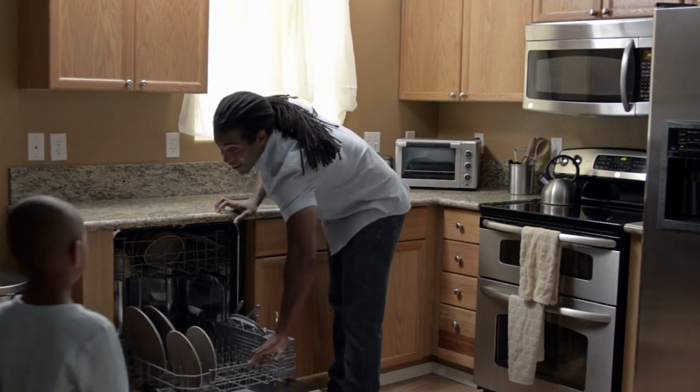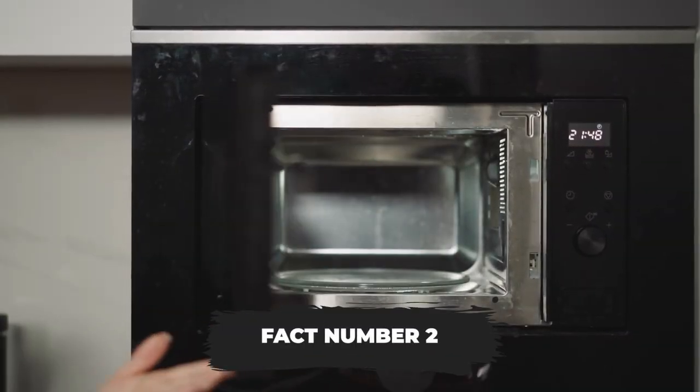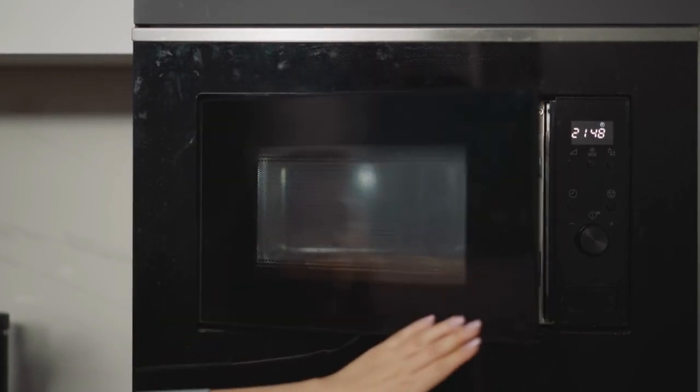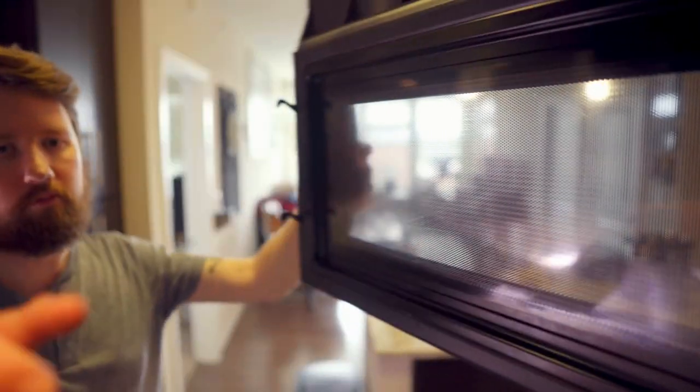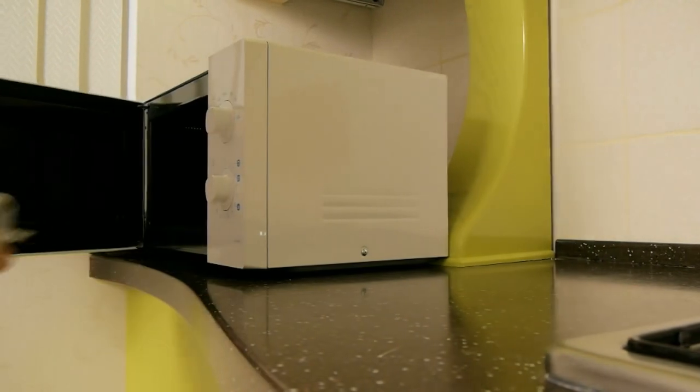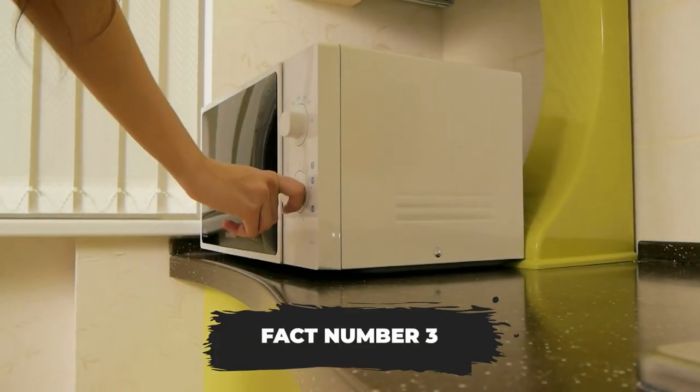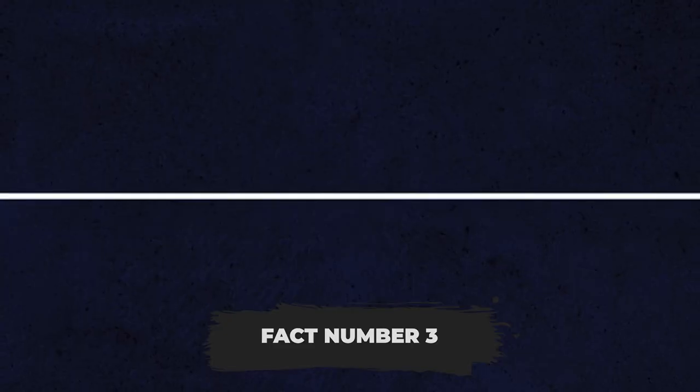Moving on to fact number two: Microwaves can't go through metal, which is why the inside of the microwave door has a metal mesh with tiny holes. It keeps the microwaves bouncing inside to cook your food while letting you peek at your meal. Science and safety looking out for you and your midnight snacks.